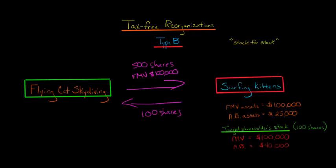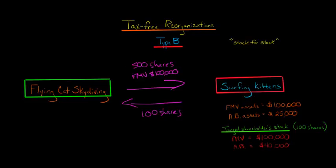The target shareholder is not going to recognize any gain. They're going to get a substituted basis in the new shares they're receiving. Their adjusted basis in the original 100 shares was $40,000, and that becomes their basis in the 500 shares of Flying Cat Skydiving — no step-up. Flying Cat Skydiving will control Surfing Kittens, typically continuing to operate it as a subsidiary. The adjusted basis of Surfing Kittens' assets stays at $25,000 — no step-up, because there's no taxable gain.